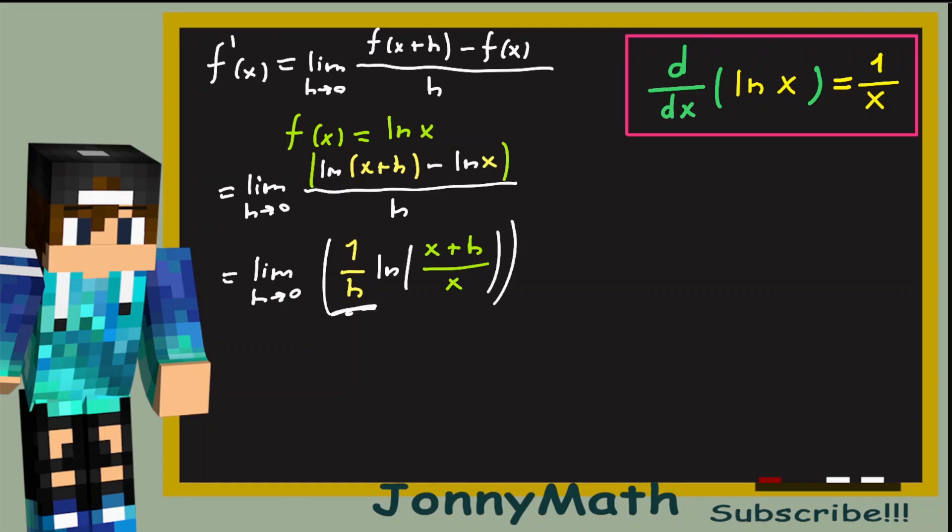Okay, now we have 1 over h that multiplies the natural logarithm, so we can take this to the exponent. So, this equals the limit as h approaches 0 of the natural log of x plus h divided by x to the 1 over h power.